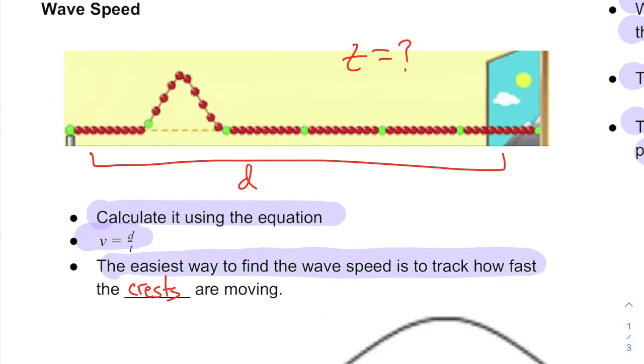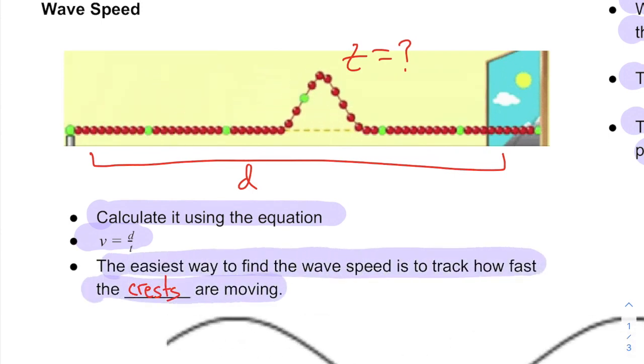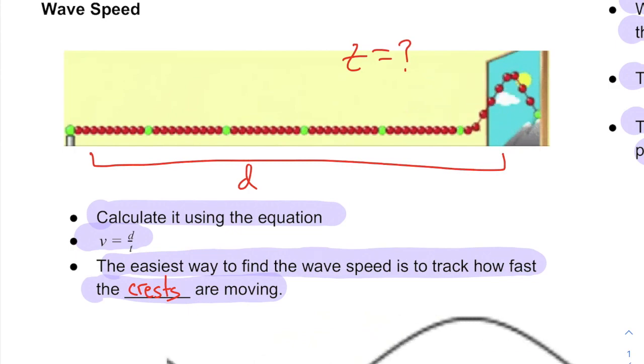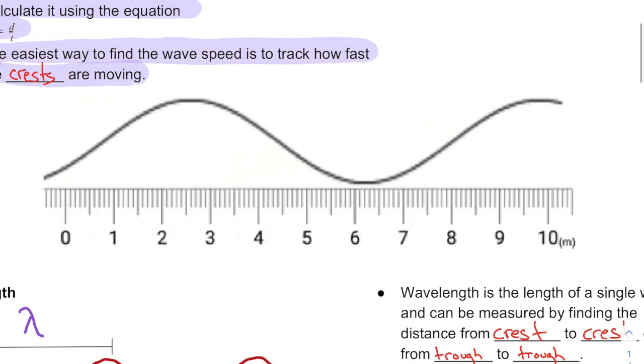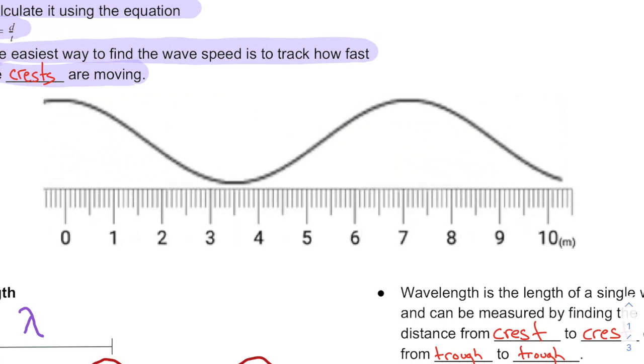And the easiest way to find the wave speed is to track how fast the crests are moving. I just like to track the crests. That's how I do it. It's not so hard. And let's do it really quick here, because you'll have to do this in labs and things like that.